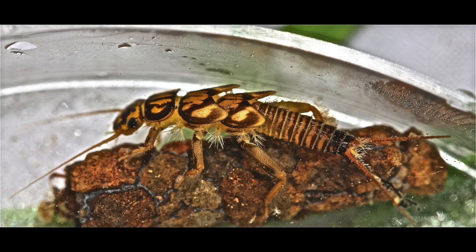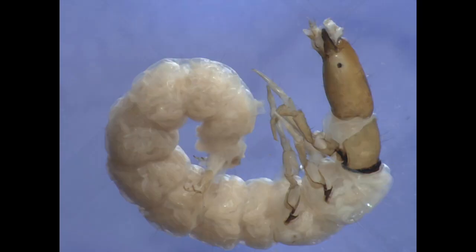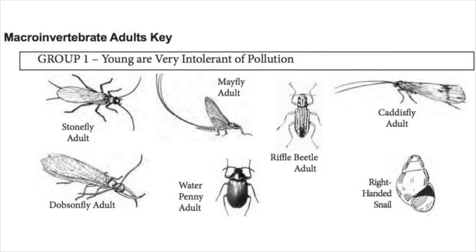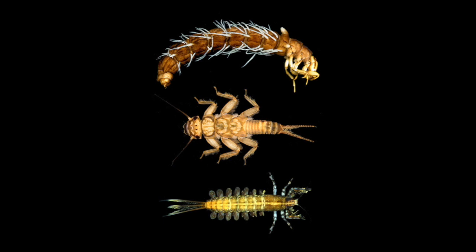For example, stoneflies, mayflies, and caddisflies — adults and larvae — are very intolerant of pollution, meaning they cannot survive in polluted water. Therefore, water sources that contain stoneflies, mayflies, and caddisflies are assumed to have good water quality.